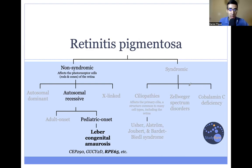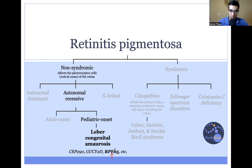For non-syndromic RP, there can be different modes of inheritance, with autosomal recessive being the most common. There can be both adult and pediatric onset autosomal recessive RP. When you have pediatric onset autosomal recessive RP, you really want to think about Leber congenital amaurosis. There are about 20 or so genes that can cause LCA. Among those is one called RPE65, which is important to remember because there is a therapeutic available for that particular genetic variant, whereas there is no therapeutic for the other causes of LCA.